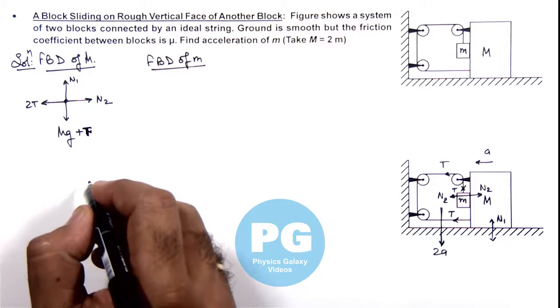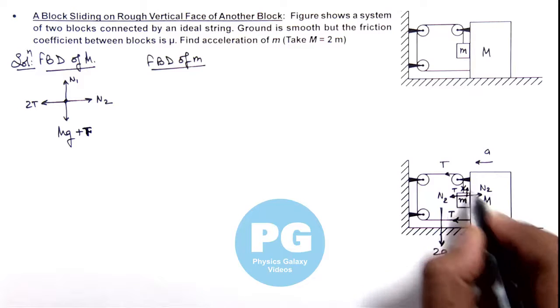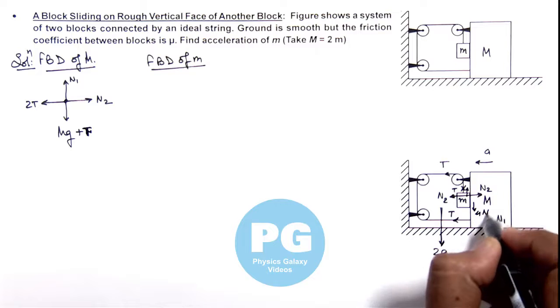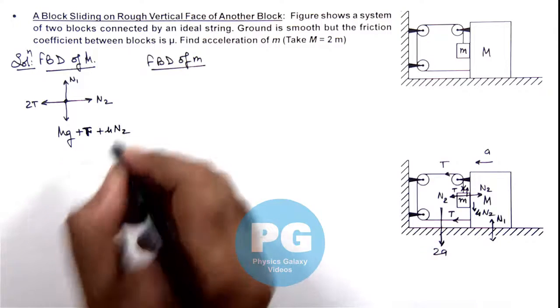If we talk about the friction, as m will be sliding down friction will act on it in upward direction, on capital M in downward direction and the value will be mu N2. Because mu is the friction coefficient and N2 is the normal contact force between the blocks. So here a force mu N2 will also be taken.